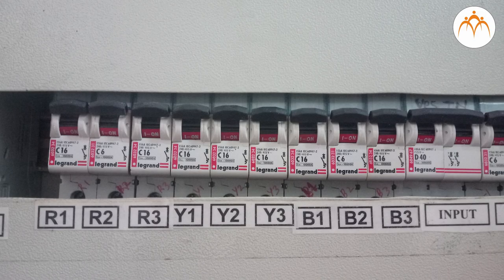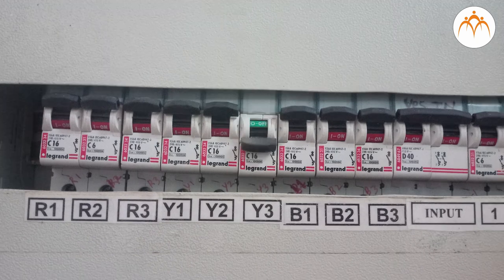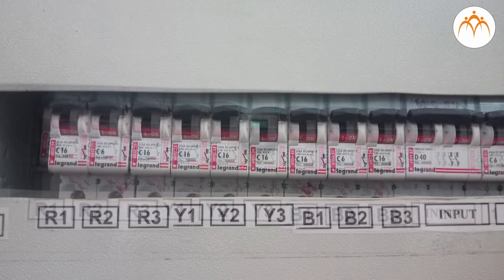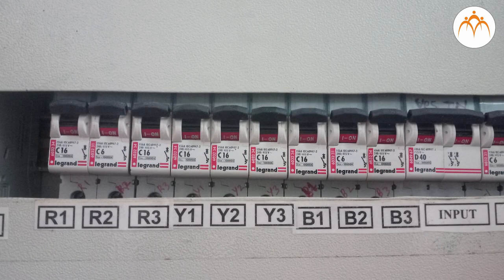To overcome the problem, miniature circuit breakers (MCBs) are used. MCB cuts off the circuit automatically when excess current flows through it. After correcting the fault in the circuit, MCB can be switched on to complete the circuit. We discussed various activities which helped us to understand circuits. Try building such circuits using everyday things.